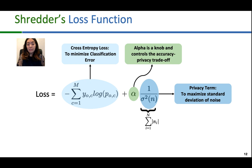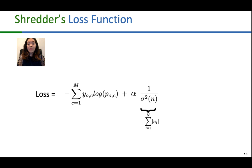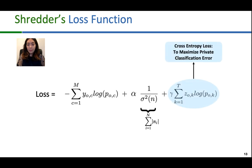Shredder's loss function reflects that it does not need to know what sensitive information in the input it is supposed to protect — it only needs to know the main inference task and tries to obfuscate any information unrelated to that task. However, if there are private labels provided for a sensitive task, Shredder can use them to improve itself and protect that particular task. For example, we can assume an inference service which is supposed to run gender recognition on input images. Shredder can add an extra cross-entropy term to its loss function which helps decrease the accuracy of the given private task — in our example, the identification of the people in those images.